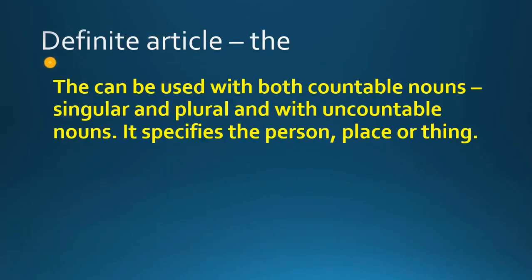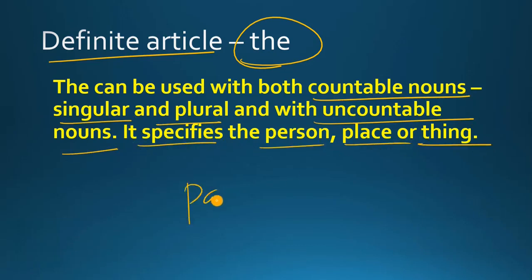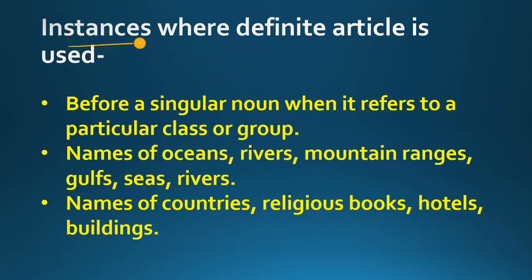Now the next important thing is the definite article 'the'. When is 'the' used? Before both countable nouns — singular and plural — and with uncountable nouns, with a specific person, place or thing. अगर आप किसी particular person, place या चीज़ की बात कर रहे हैं, उसके नाम से पहले आप 'the' use करेंगे. Now let us see some instances where a definite article is used.